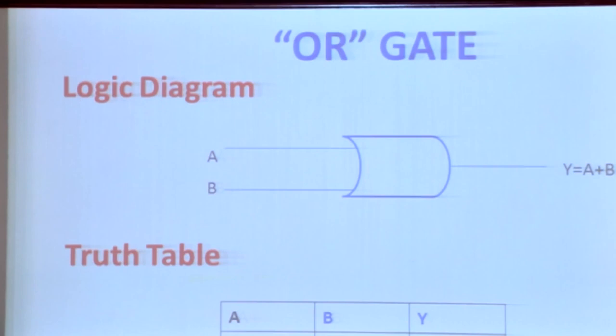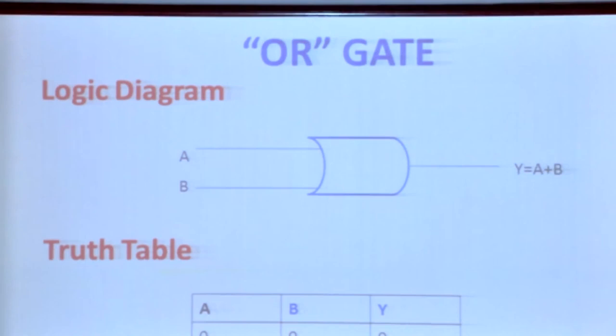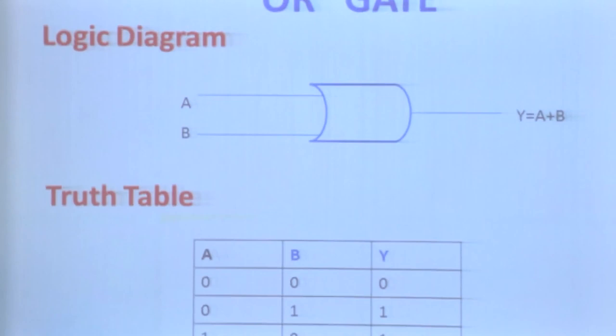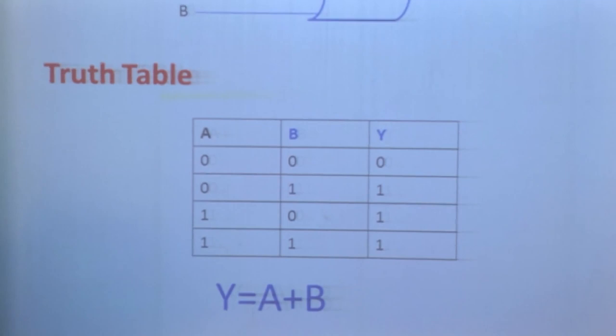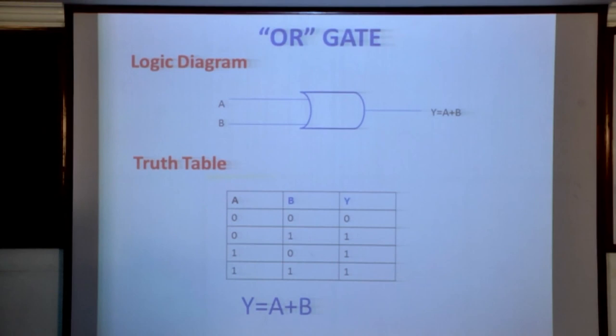The next gate is the OR gate. The expression of the OR gate is A plus B. Here also, it takes input A and input B, and the output is represented as Y. The OR gate is represented by the plus symbol. Look at the truth table: if both the inputs are low — that is, both inputs are 0 — then the output is 0.